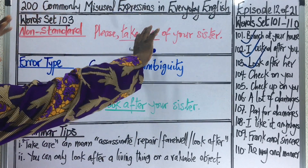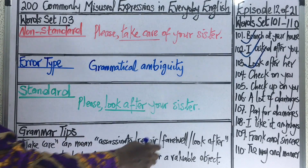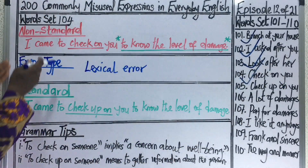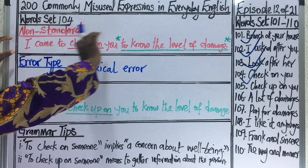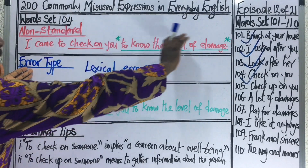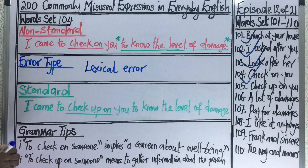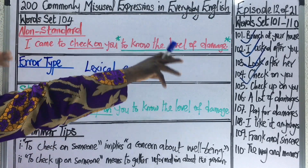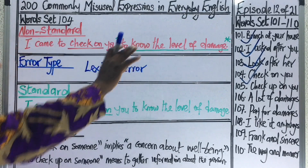We move forward to our next expression, which is 'check on you.' Our next expression from word set 104 is: I came to check on you to know the level of damage — with 'check on' underlined to indicate a lexical error. This expression contains a lexical error because a wrong phrase — 'check on' — has been used in it.